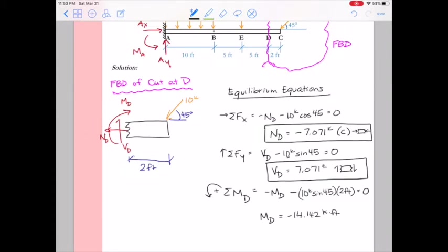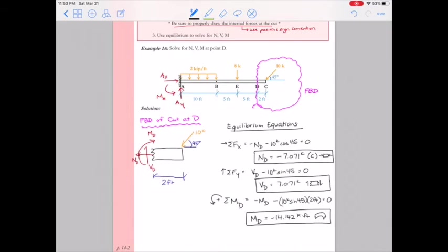So doing our math, we get that the moment at D is negative 14.142 kip-feet. Again I check my negative sign convention for moment - that means it's a sad beam or that it's concave down at point D. So hopefully this is a good recall of everything we did in statics for finding axial force, shear, moment at a point. Congratulations, you just finished your first training problem.